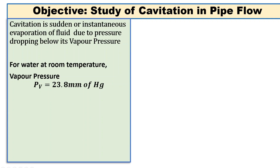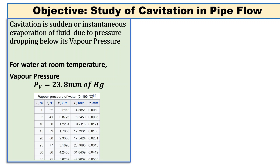For water, the vapor pressure at room temperature — that is 25 degrees centigrade — is approximately 23.8 mmHg, which in other units are as follows.